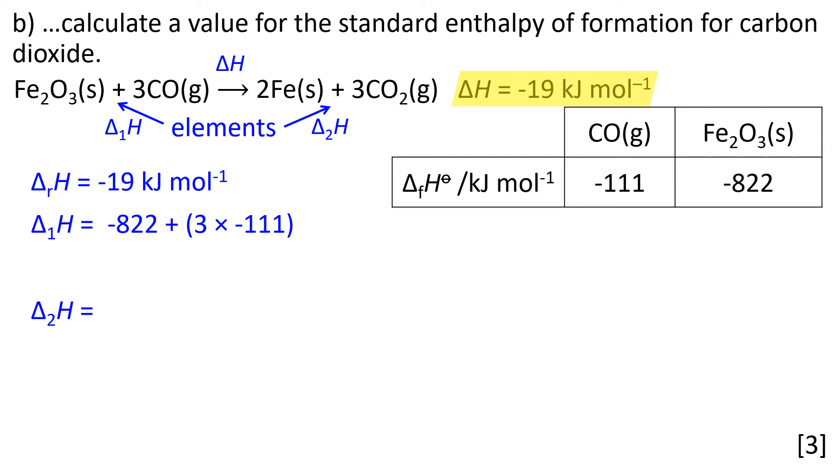Δ₁H, if we take a look at the enthalpies of formation, we are forming one mole of iron(III) oxide Fe₂O₃ and three moles of carbon monoxide. So that enthalpy change Δ₁H is -822 + (3 × -111), which works out to be -1155 kJ mol⁻¹.